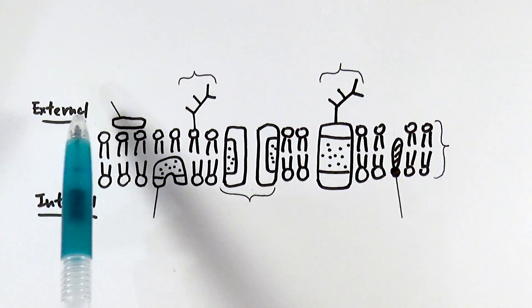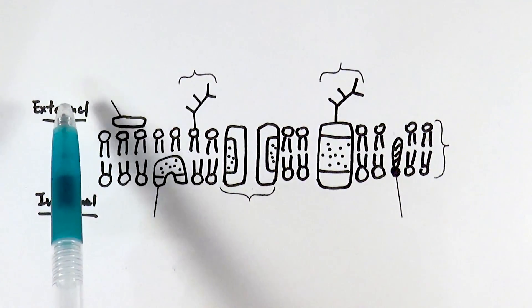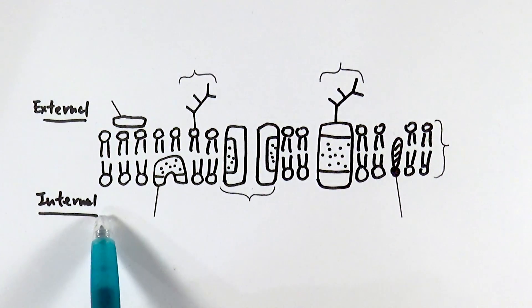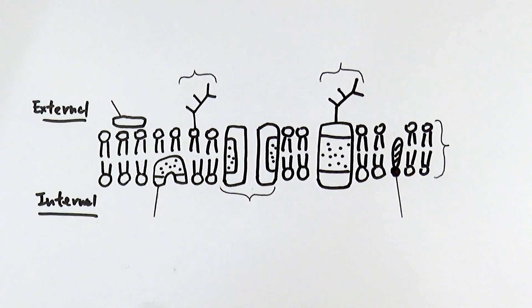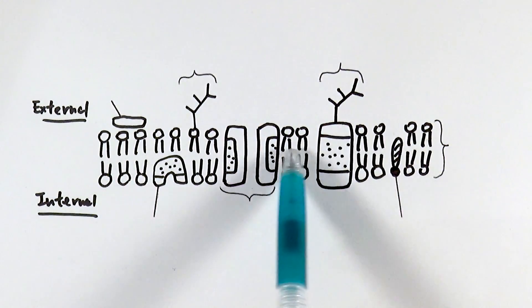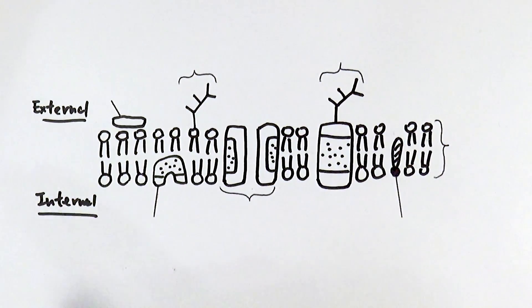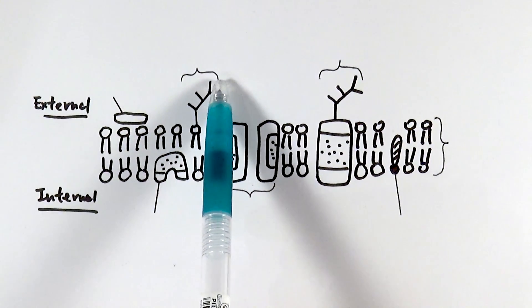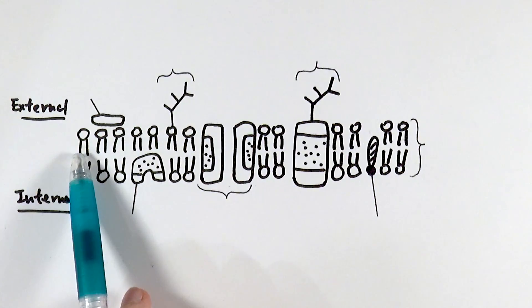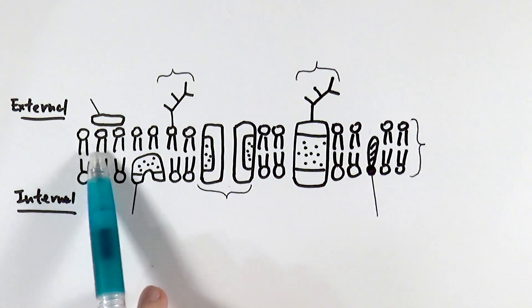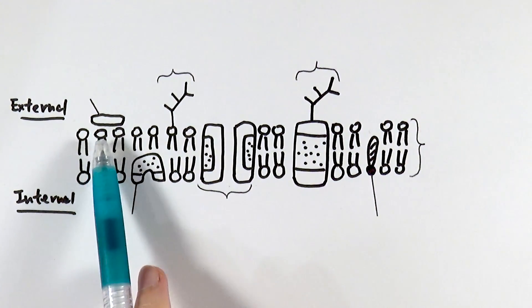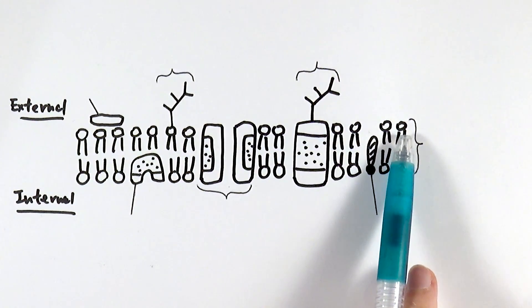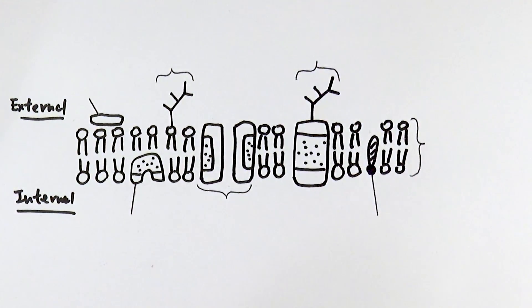As you can see, we've got the external side, which is the tissue fluid, and on this side is the internal side, which is the cytoplasm. So imagine this is a cell surface membrane going along the outside of the cell — cytoplasm on one side and tissue fluid on the other. The plasma membrane is a phospholipid bilayer, and these individual circles with two tails are each individually a phospholipid.